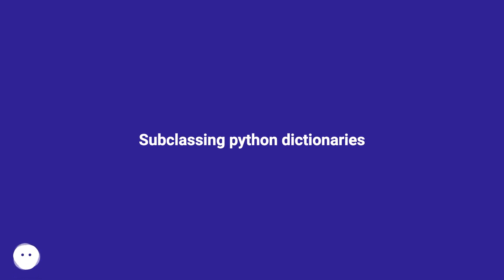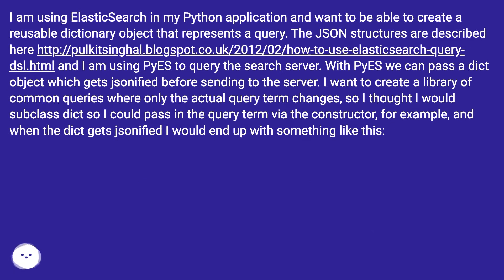Subclassing Python Dictionaries. I am using Elasticsearch in my Python application and want to be able to create a reusable dictionary object that represents the query. The JSON structures are described at this URL, and I am using Pies to query the search server. With Pies, we can pass a dict object which gets jsonified before sending to the server.